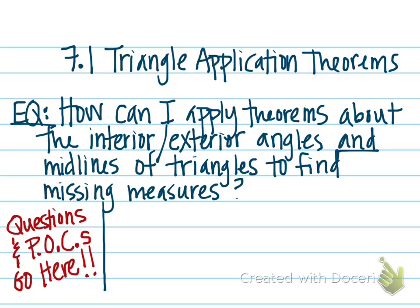Hi kids, these notes are going to be over 7.1 triangle application theorems and 7.2 proof-oriented triangle theorems. In 7.1, our essential question is how can I apply theorems about the interior and exterior angles and midlines of triangles to find missing measures? Be sure as you're taking notes to write any questions you have in the left column, or any questions you think would be good study questions.